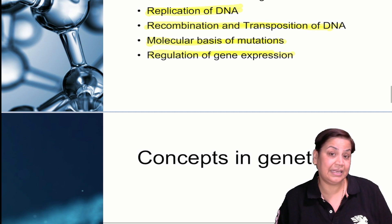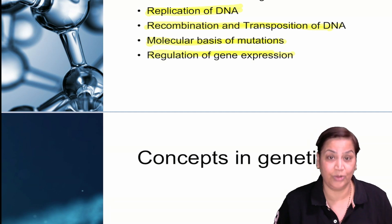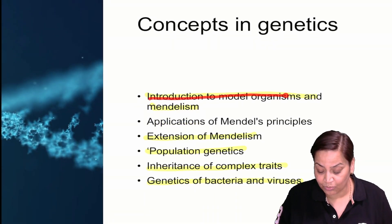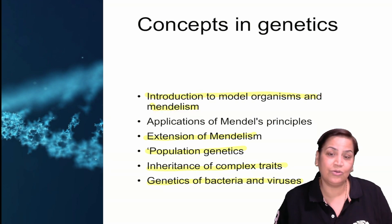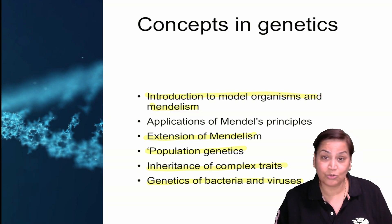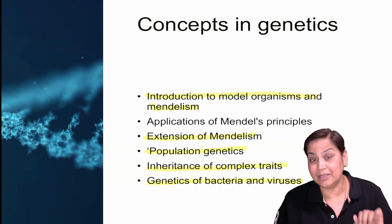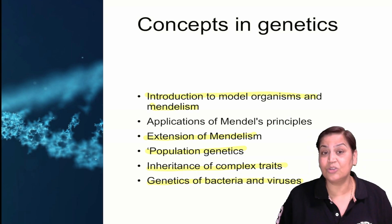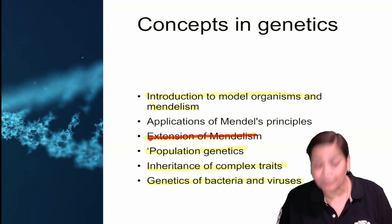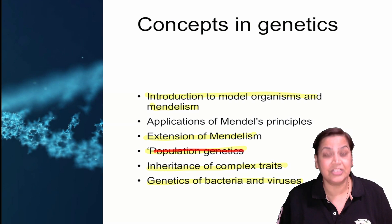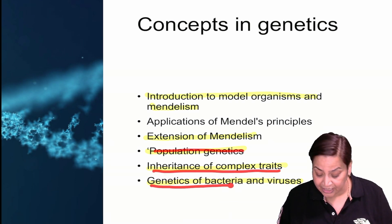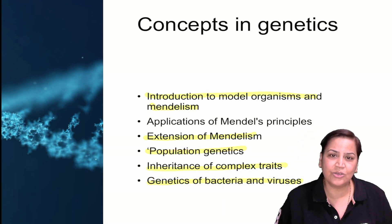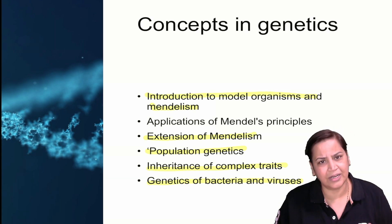Then comes concepts in genetics, which you are going to study in detail. Topics include introduction to model organisms and Mendelism. Mendel, the father of genetics - you should know the three laws given by Mendel: the law of segregation, the law of independent assortment and the law of dominance. There is also non-Mendelian inheritance, extension of Mendelism, population genetics, inheritance of complex traits and genetics of bacteria and viruses - transformation, transduction and conjugation. It is basically revision of what you have studied in graduation.